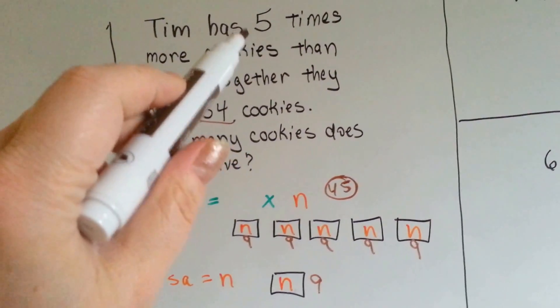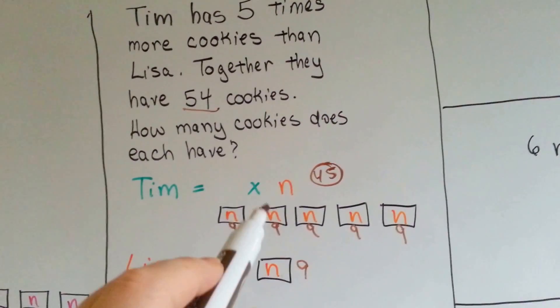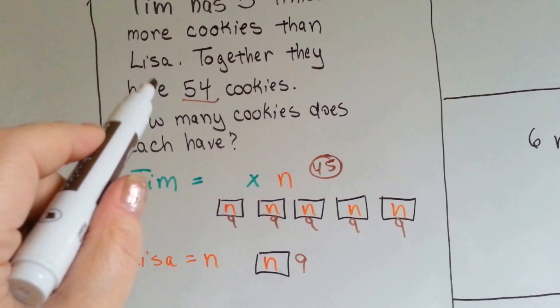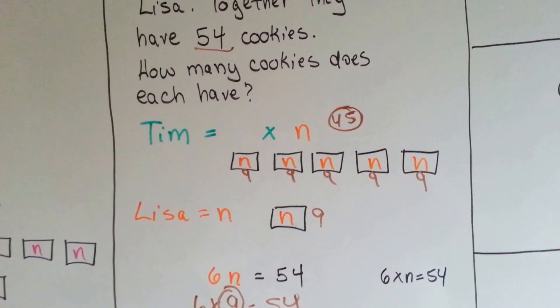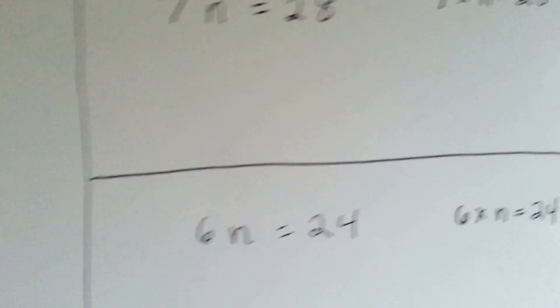If he has five times more, then he's got five n. He's got five more than her, she's only got one n. See that? So, let's try solving for these.